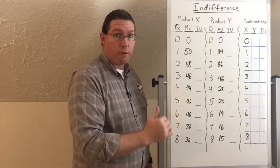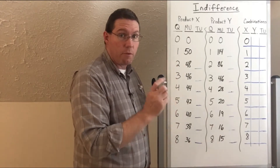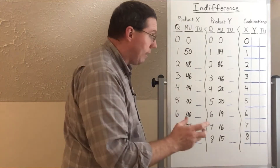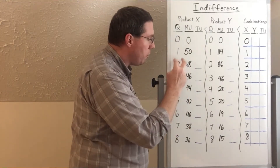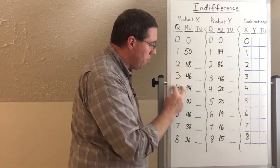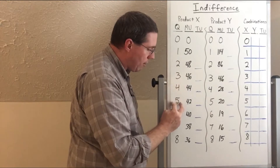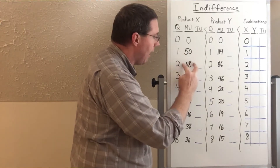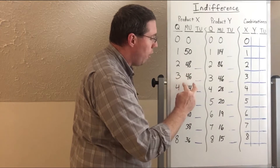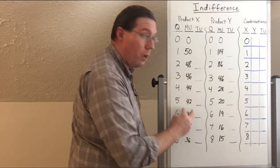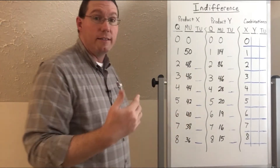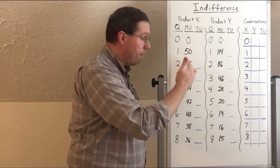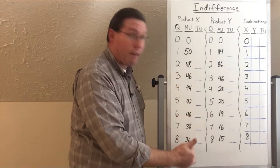You can see that the benefit gained from each wing — assuming all these wings are the exact same size and hotness — as we consume more and more wings, each subsequent wing gives us less benefit. So the marginal benefit of each wing is diminishing. Hence, the law of diminishing marginal benefit.